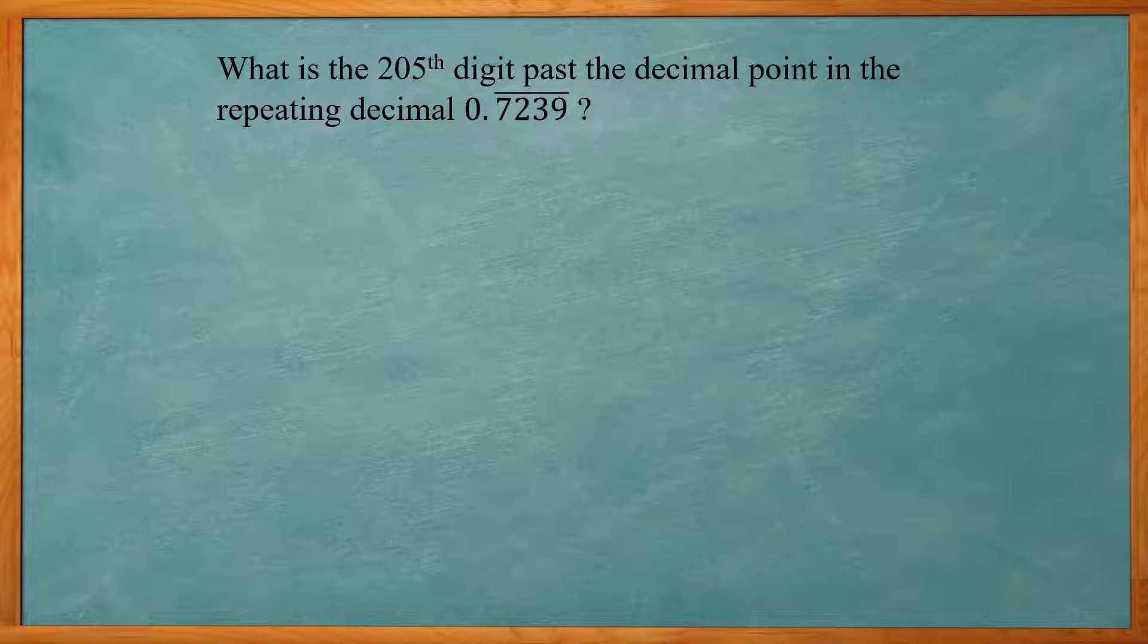Now for a repeating decimal, you know you get 0.7239 that means it's just going to repeat again and again forever.